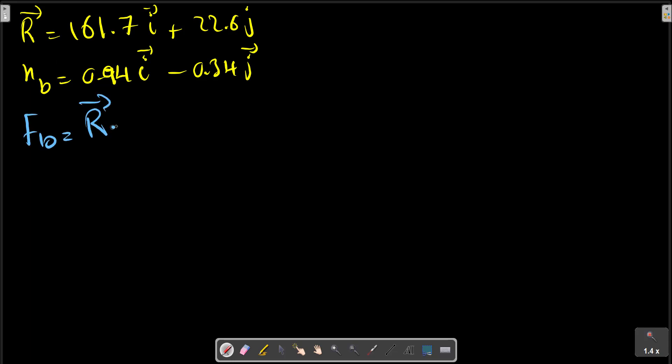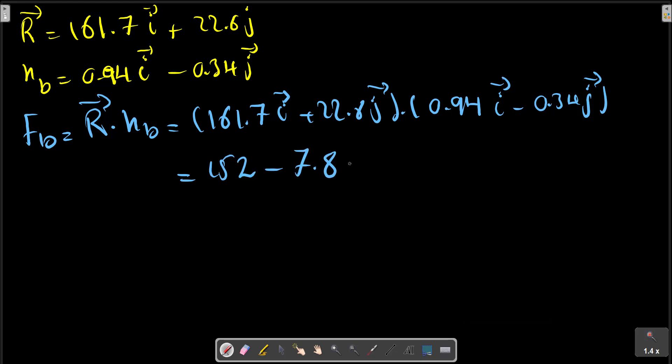FB equals R dot n_b, the dot product of R and n_b. Making the calculation with the dot product, this part and this part result in this quantity, and this multiplication results in this digit.